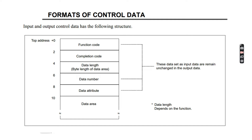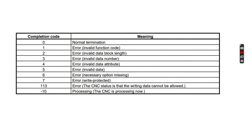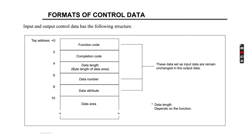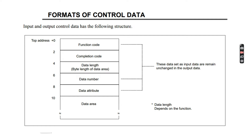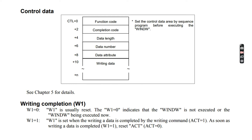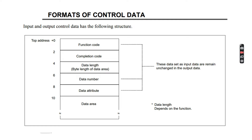The completion code is set after executing the function code, based on whatever the result is — there is a table for the completion code. For example, if I am reading parameter number 20 and its value is 4, and 4 is output in our output section data area, it will be normal completion. Data length defines how many bytes of data we are reading or writing, defined at data number 4. Data number 5 and data attribute are also required fields if reading a parameter.